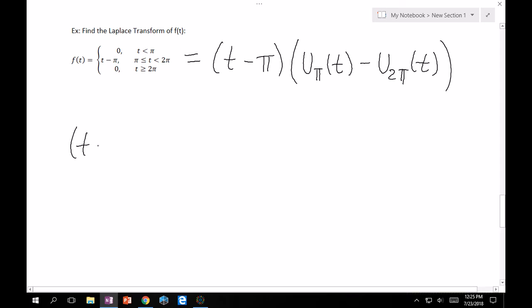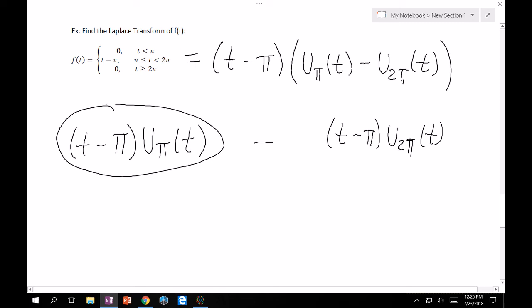So, we have t minus pi uπ of t. And then we have a minus sign, which I'll take care of at the end as always. And then it's t minus pi u2π of t. Now, as taking Laplace of this goes, this one right here is in the form that we can just directly take Laplace of. What this means is, okay, we have the function t and it's shifted by pi, which is exactly the shift that we have here. So, what happens is we tack on an e to the minus c s where c is pi in this case. And then we take the Laplace of t itself. And that comes out to be e to the minus pi s over s squared. Because Laplace of t is just 1 over s squared. So, that's fine. We've solved this part.